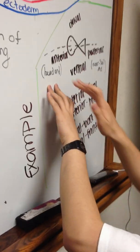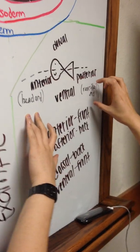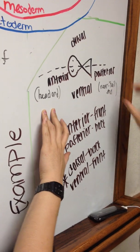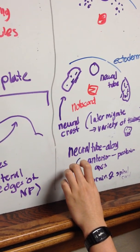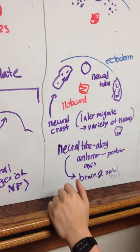The anterior refers to the head end, and the posterior refers to the rear tail end. So it's along that axis that the neural tube will form. The neural tube will form the brain and the spinal cord.